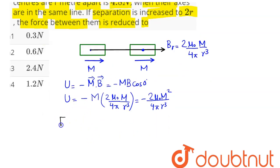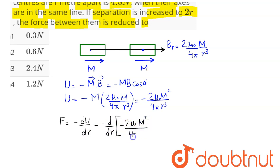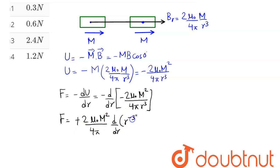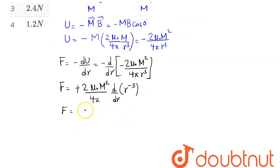Since this is a conservative force, the magnetic force is F = −dU/dr. Differentiating U = −(2 mu naught m²) / (4pi r³), we apply d/dr of r^(−3) = −3r^(−4). This gives F = −3/(2pi) × mu naught × m² / r⁴.